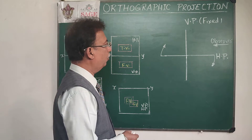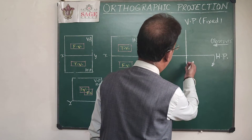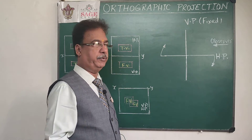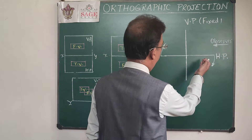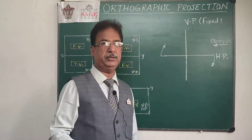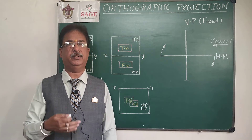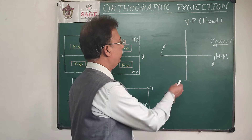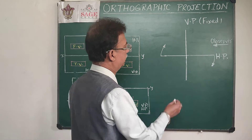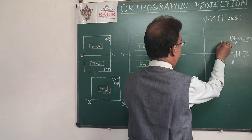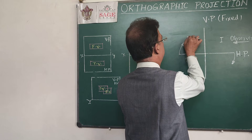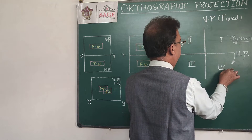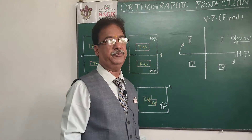Today I am going to talk about the quadrant system. As we already know, this wall will be our vertical plane and this floor will be our horizontal plane. The horizontal plane and vertical plane divide the whole space into four quadrants — this is the first quadrant, this is the second, this is the third, and this is the fourth.